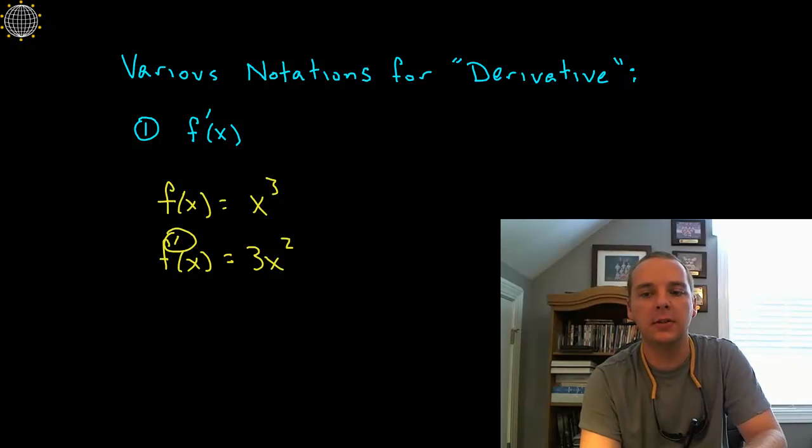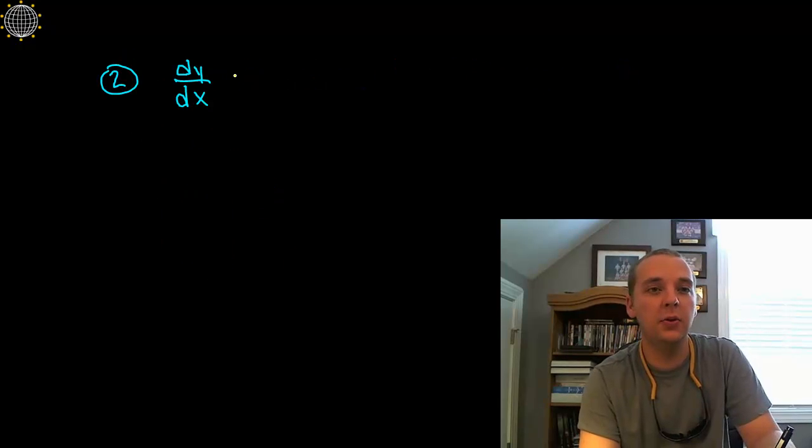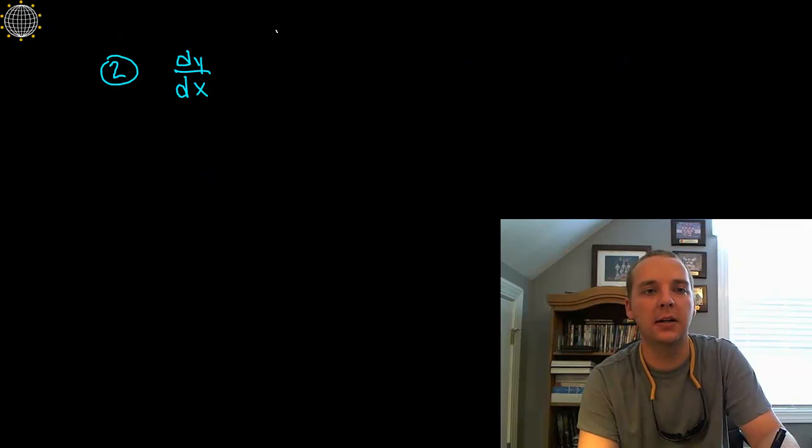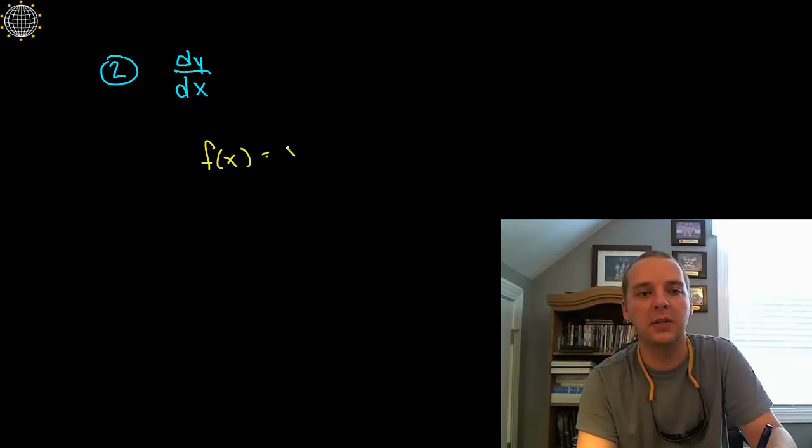The next notation is possibly a new one for you, so dy dx. We use this all the time, practically just as much as f prime of x. Let me explain the context here. That previous example where we wrote f of x equals x squared.